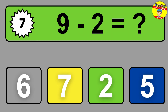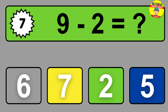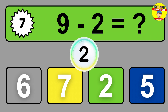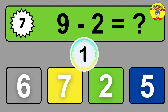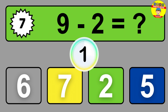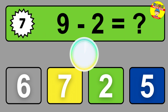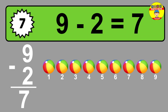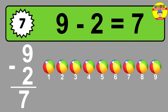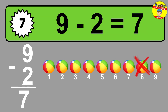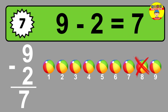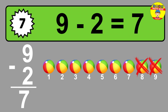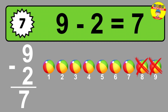Question 7. 9 minus 2 equals what? So the answer is 9 minus 2 is 7. Let's count it: 1, 2, 3, 4, 5, 6, 7.